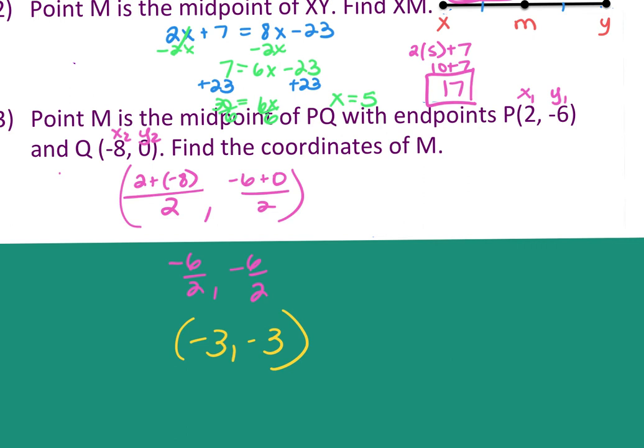Yesterday we talked about what happens if it's not even. You want to keep it improper. You don't need to even take it to the mixed number form. Just keep it improper. Just make sure it's simplified. That's all. So if it's negative 6 over 2, it needs to be negative 3. Questions on that one?